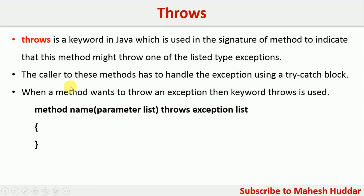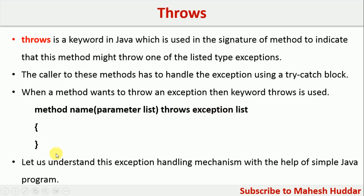The second part is: if you have used an exceptions list with the throws keyword, you should have an associated try and catch block wherever you have called this particular method. For example, if you have listed only one exception, you should have a try and one associated catch block. If you have more than one exception listed, you should have a try block with more than one catch block — a separate catch block for each of the exceptions. We will take a very simple example to understand this concept.